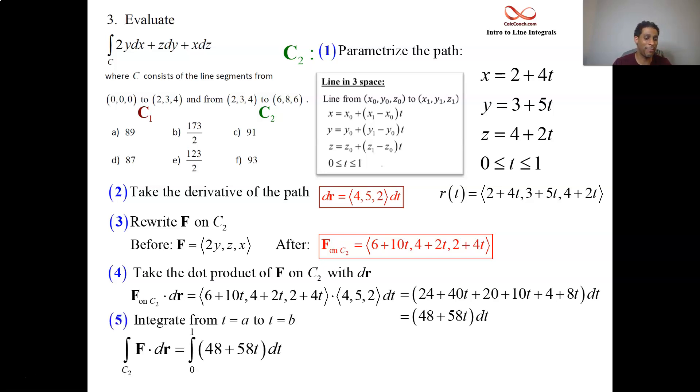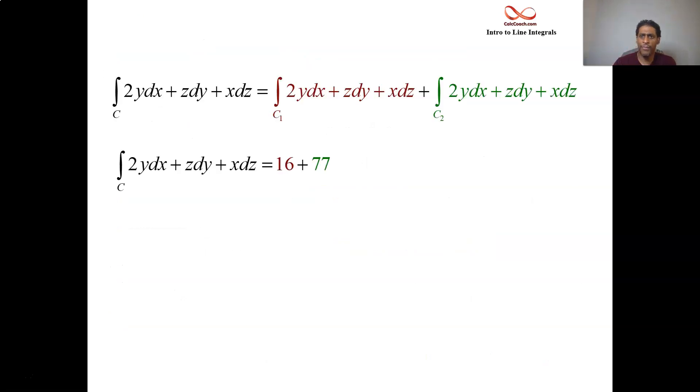48t plus 29t squared. So 48 plus 29 is 77. The 0 gives you 0. So we had 16, and now the 77 together give you 93.